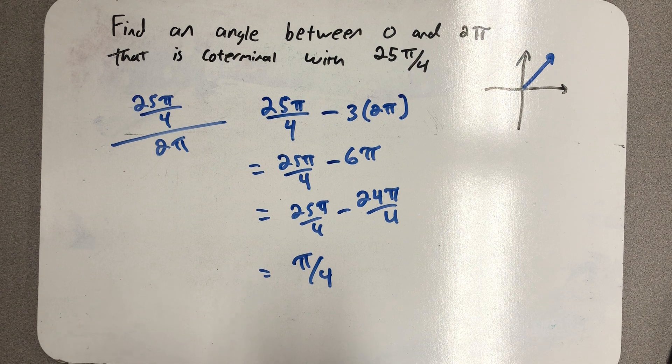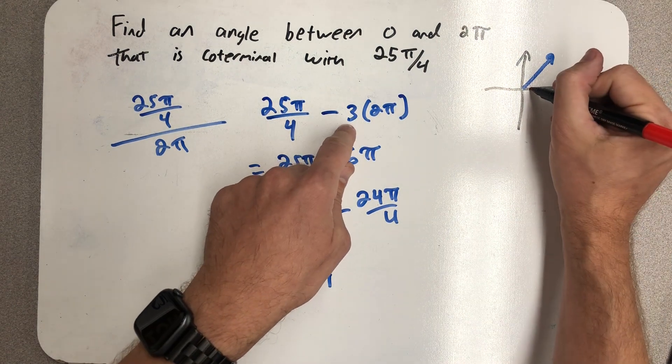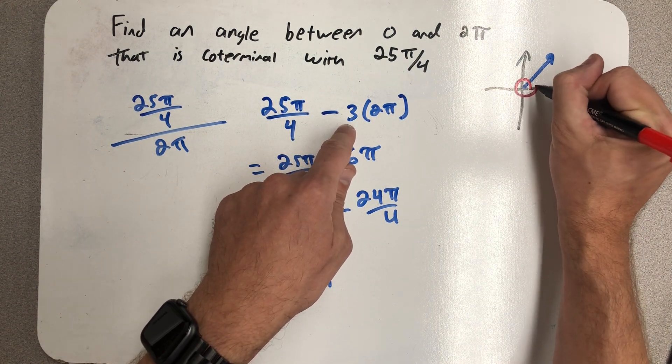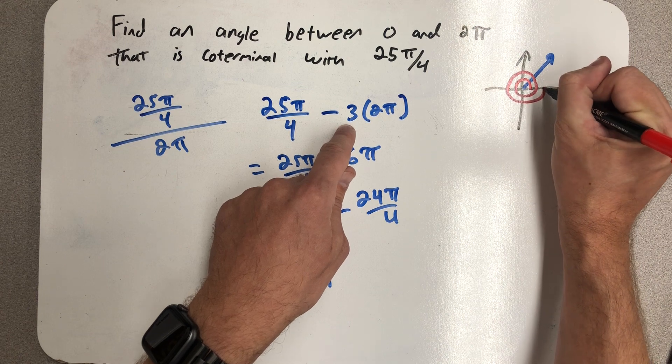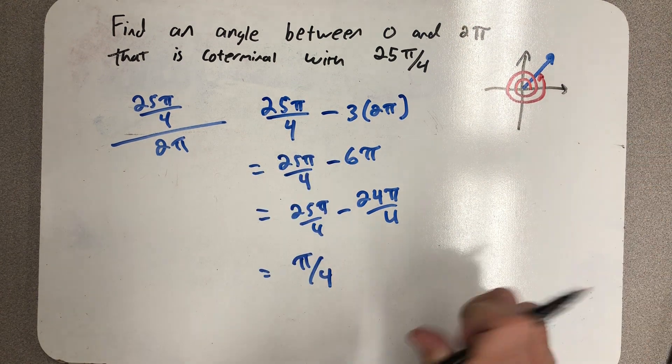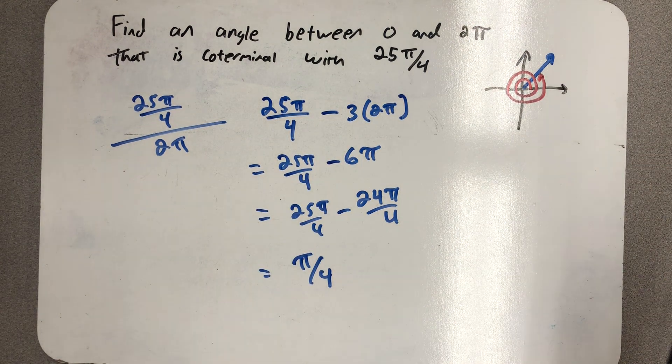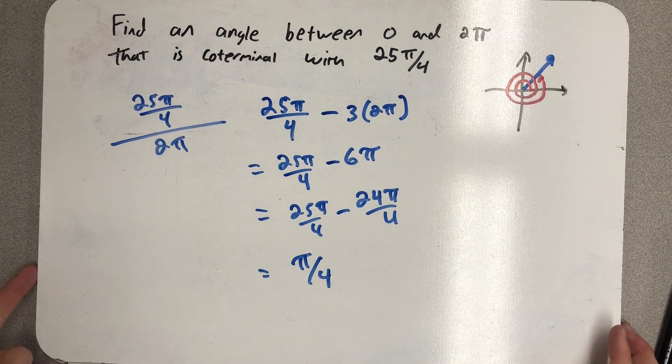If I wanted to really sketch this angle, I know I made three full revolutions first. So 1, 2, 3, and now that remaining π fourths. There's my angle 25π fourths.